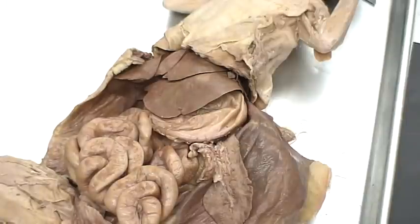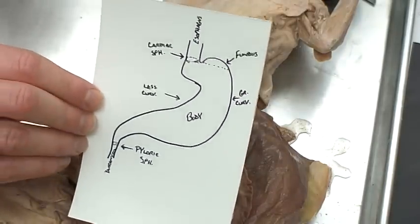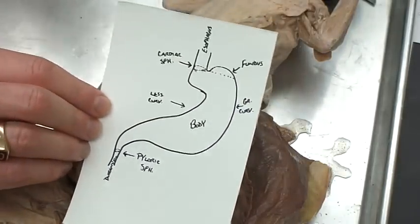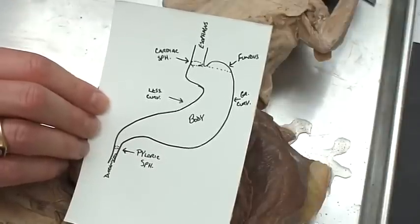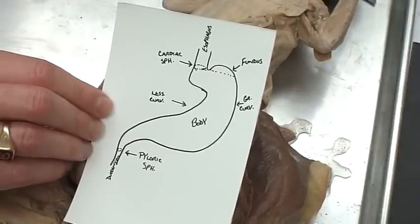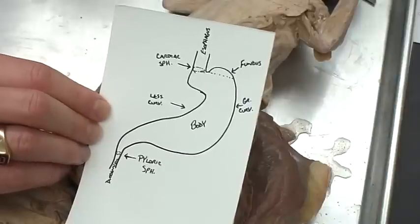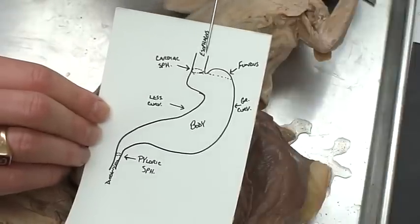Let's take a look at the entire gastrointestinal tract. Food will start by being swallowed, go down the esophagus, and come down into the stomach, which is a storage chamber. Very little digestion takes place there — it's more mechanical. Some enzymes are going to start, but very little digestion and absorption actually occurs within the stomach. It's more of a storage tank than anything.